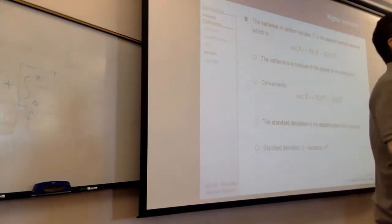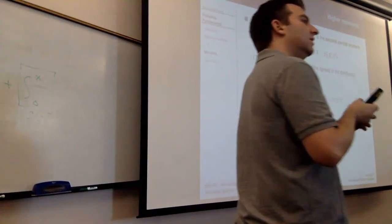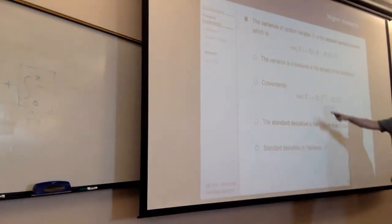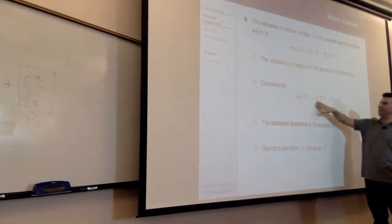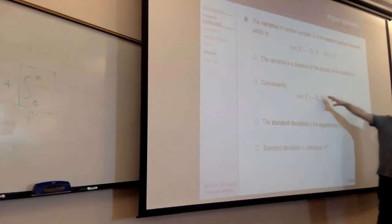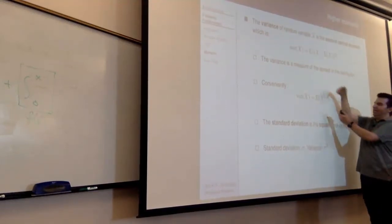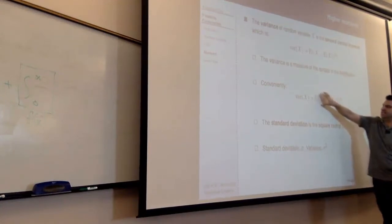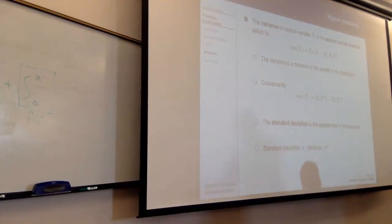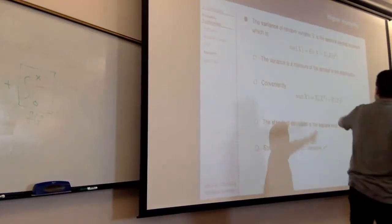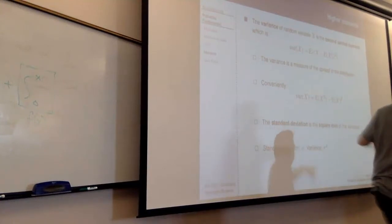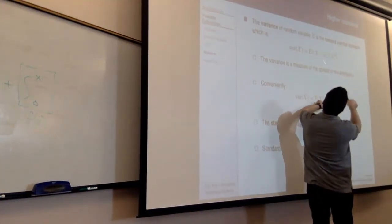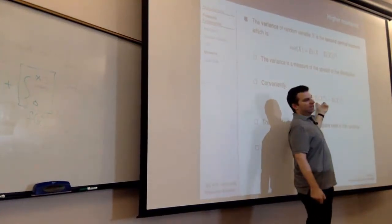A moment is the expectation of a function — in mechanics, a moment is mass at a distance, so probability is the mass and the argument is like the distance. A non-central moment is when you don't subtract off the mean; a central moment is when you do. So the second moment is the expectation of x squared, and the second central moment is the variance. Tables of distributions often give you the non-central moments, not the central moments, so you calculate central moments using the variance formula.